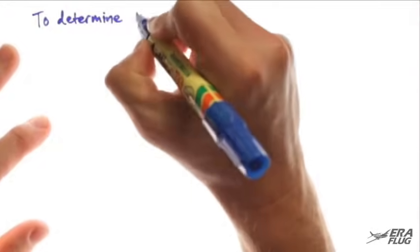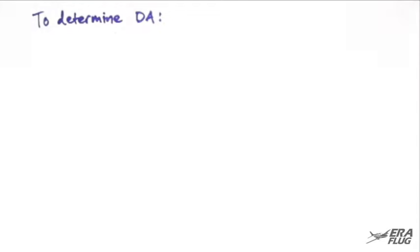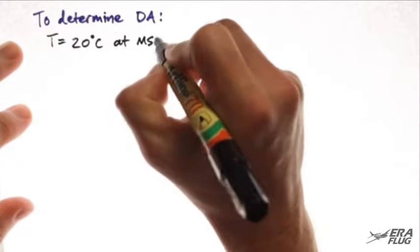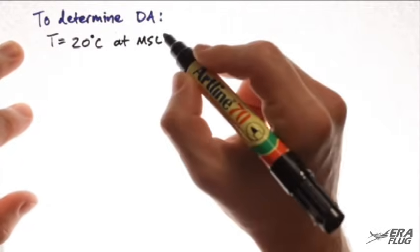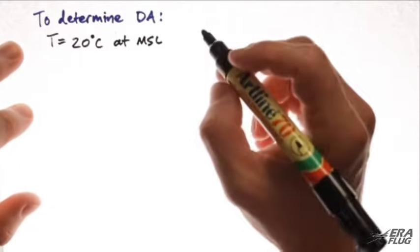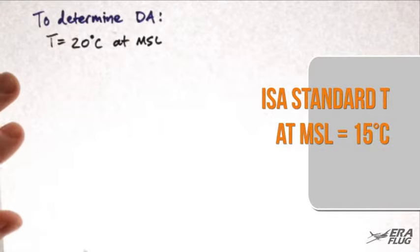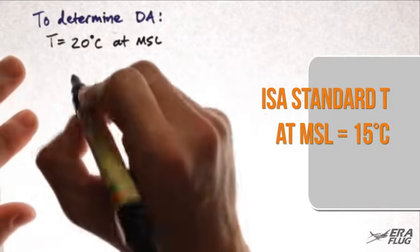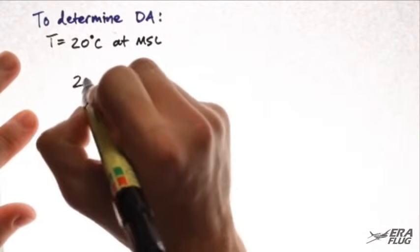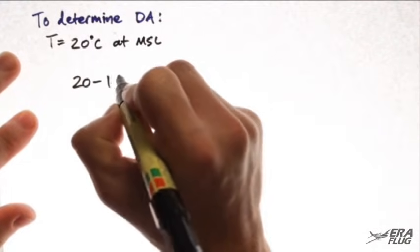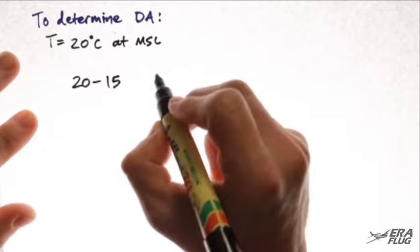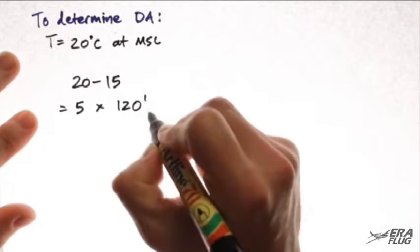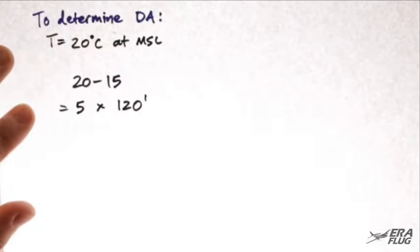To determine the density altitude, we'll assume a temperature of 20 degrees C at mean sea level. The ISA standard temperature at mean sea level is 15 degrees C. The difference is 20 minus 15 C, equals 5 degrees. And we multiply that by 120.